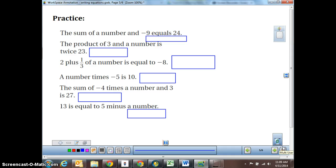All right. So again, we've got a little bit more practice here. The sum of a number and negative 9 equals 24. The product of 3 and a number is twice 23. 2 plus a third of a number is equal to a negative 8. A number times a negative 5 is 10. The sum of a negative 4 times a number and 3 is 27. And 13 is equal to 5 minus a number.